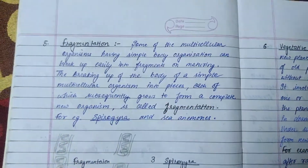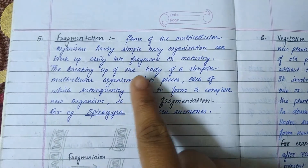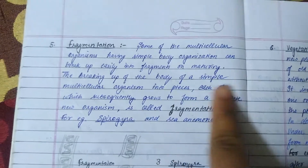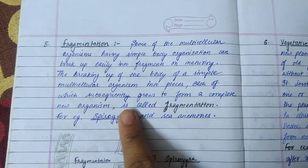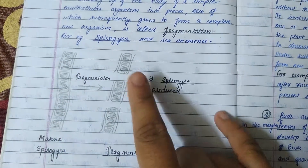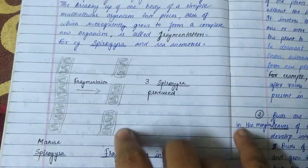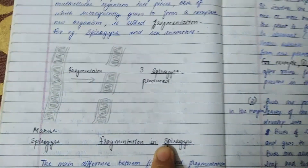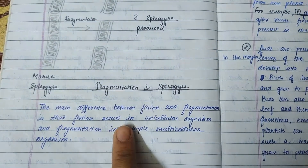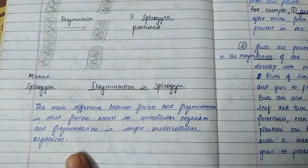The next method of asexual reproduction is fragmentation. Some simple multicellular organisms break up easily into fragments on maturing. The breaking up of the body of a simple multicellular organism into pieces, each of which subsequently grows to form a complete new organism, is called fragmentation. For example, spirogyra — if it is cut into pieces, every piece is capable of producing a complete spirogyra. The main difference between fission and fragmentation is that fission occurs in unicellular organisms, while fragmentation occurs in simple multicellular organisms.